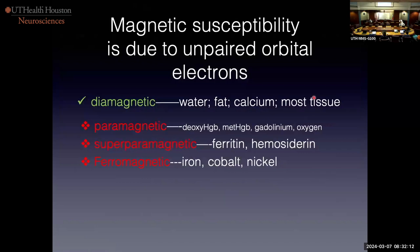Magnetic susceptibility happens because of unpaired orbital electrons. Things that really screw up T2 star weighted images include: paramagnetic deoxyhemoglobin, methemoglobin, gadolinium at high concentration, and oxygen; as well as superparamagnetic ferritin and hemosiderin with around 10,000 unpaired electrons. Ferromagnetic means when the metal gets in the magnet, domains line up and it becomes a permanent magnet — that's why metal really messes up our images.